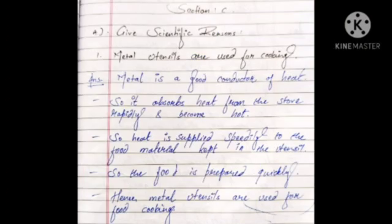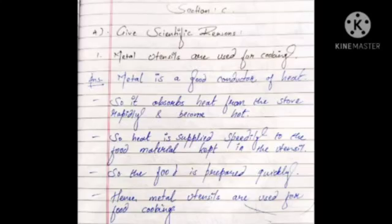Chapter number 4, Section C: Give scientific reasons. The first one is — metal utensils are used for cooking. The answer is: metal is a good conductor of heat, so it absorbs heat from the stove rapidly and becomes hot, supplying heat speedily to the food materials kept in the utensils, so the food is prepared quickly. Hence metal utensils are used for cooking.